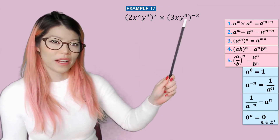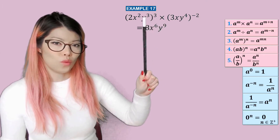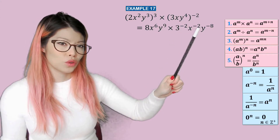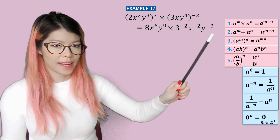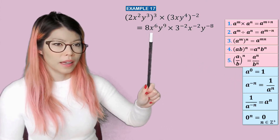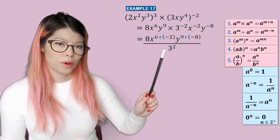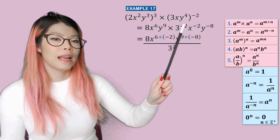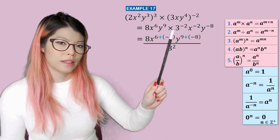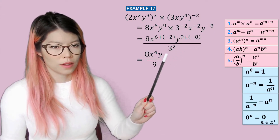Example seventeen: we have brackets this time, so work on the brackets first. Two to the power of three, x squared times three is six, and y cubed times three is nine. Then we do the same for the bracket: three to the negative two, x to the invisible one times negative two is negative two, and y to the four times negative two is negative eight. The easiest approach is to add the powers together. Moving the three to the negative two to the bottom makes it positive. So x to the six plus negative two is x to the four, and y to the nine plus negative eight is y to the one. So the final answer has three squared, x to the four, and y to the one.